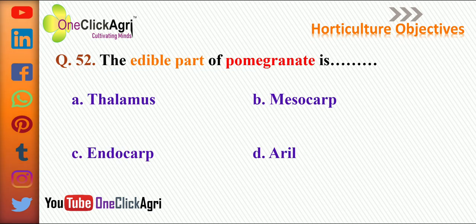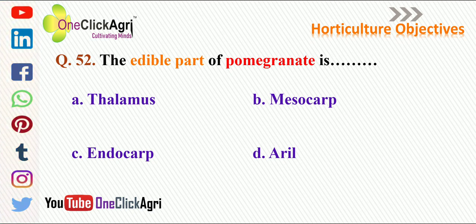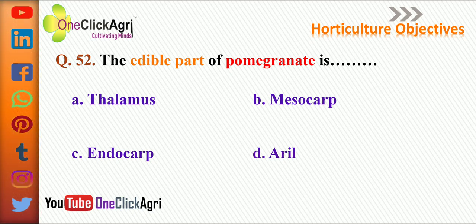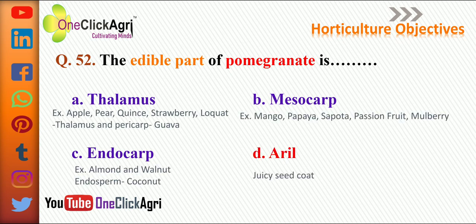The next question: the edible part of pomegranate is Aril, also called the juicy seed coat. Thalamus is the edible part of apple, pear, quince, strawberry, and loquat. Thalamus and pericarp is the edible part of gourd.